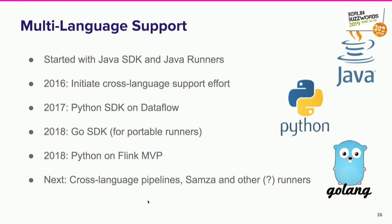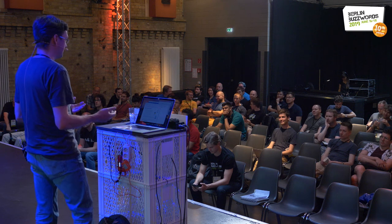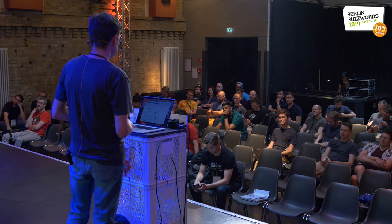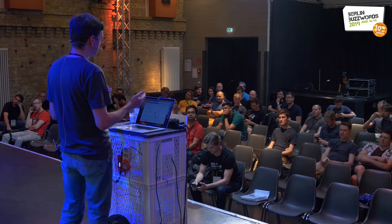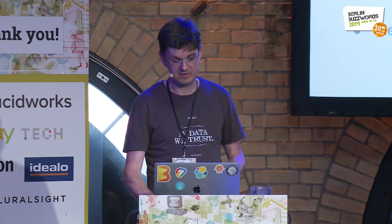There is also an experimental Go SDK for Beam. You pick what is best for your use case — maybe you have already written code or have some libraries — and then you run it on your runner of choice, even if the runner is Flink Java. That's the promise of Beam, and we are making progress on that path.